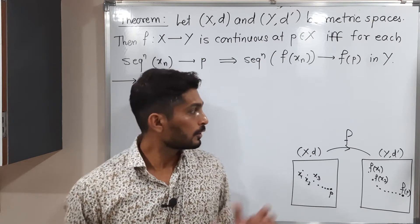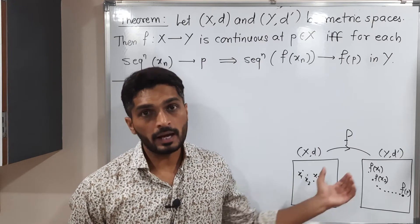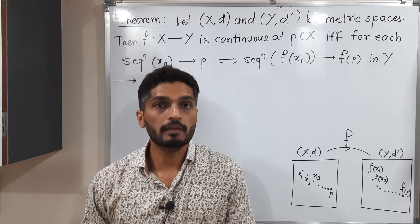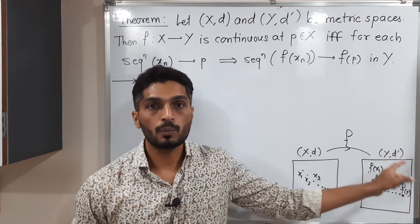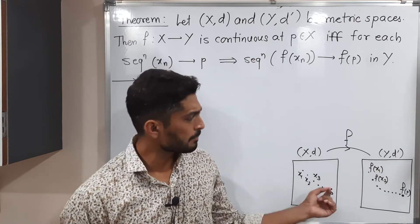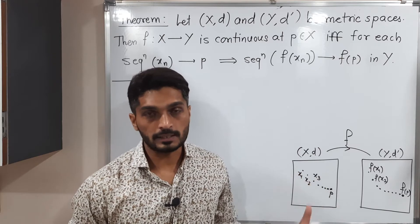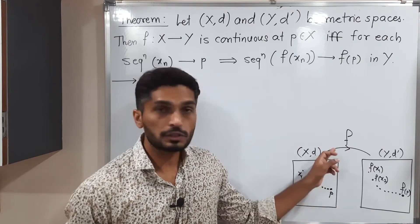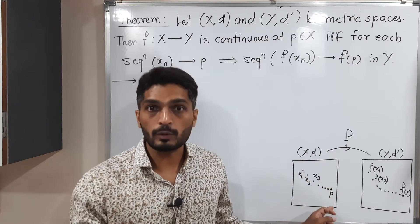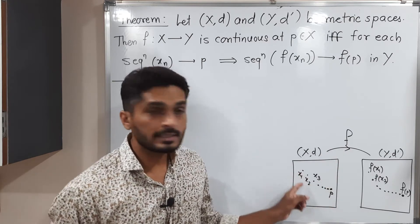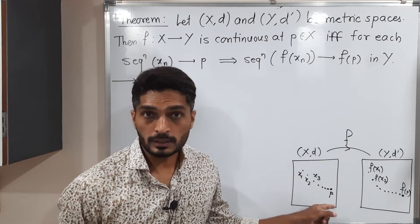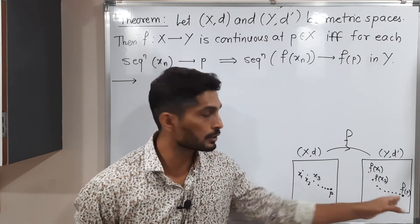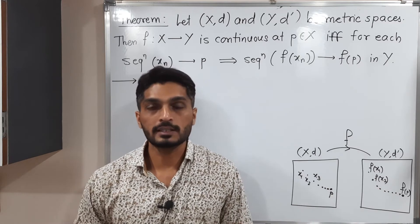They have given two metric spaces (X, d) and (Y, d'). Here we have a function f from X to Y, and there is some point p in the metric space (X, d). We have to prove that function f is continuous at p if and only if for any sequence xn converging to p, the corresponding sequence f(xn) in Y converges to f(p).